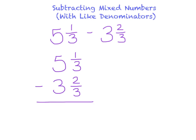When I rename 5 and 1/3, I'm going to borrow 1 whole number from the 5. So there will only be 4 whole numbers left. And then I'm going to take the 1 that I borrowed and I'm going to change it into a fraction.